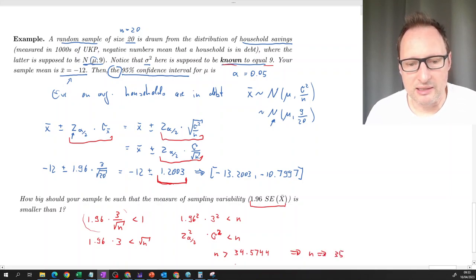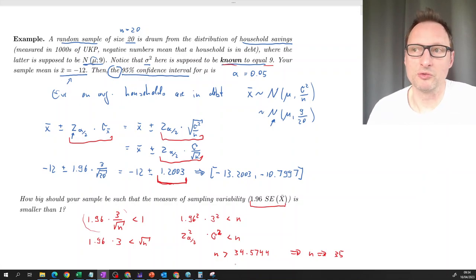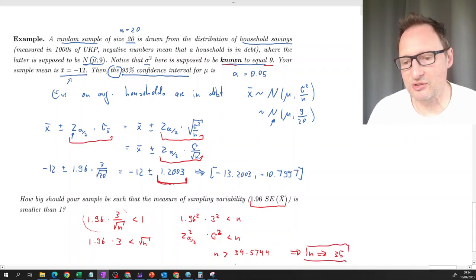So here you can't really round. So anyway, if you rounded this, you would also get 35. But let's say it's at 34.1. You would be rounding that to 34. But that would make the sampling variability not smaller than 1. So you have to round this up. So here the sample size has to be at least 35 to get a measure of sampling variability smaller than 1.